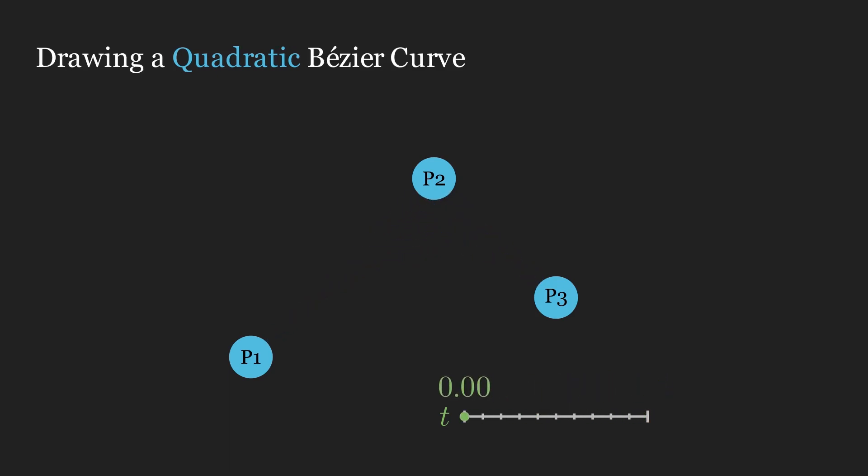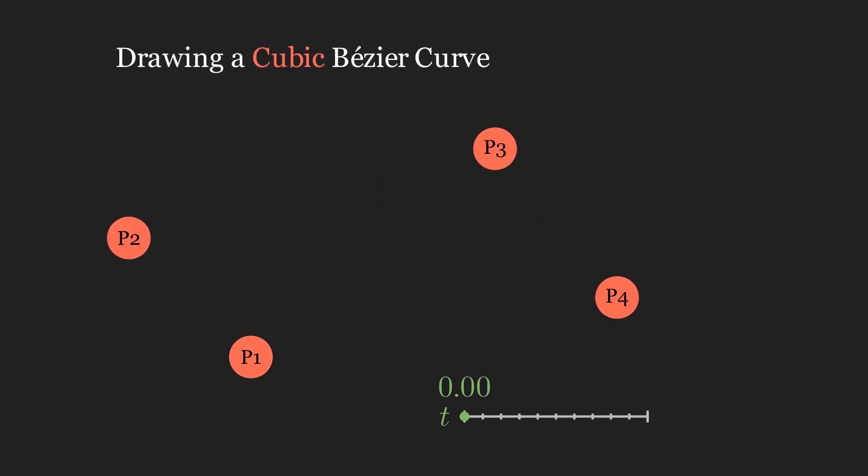Let's try applying the same logic to a Bezier curve with another control point added. For simplicity's sake, I've set the value of t to 0.5, which means that all the linear interpolations we form will be about 50% complete.